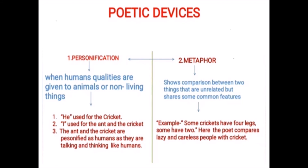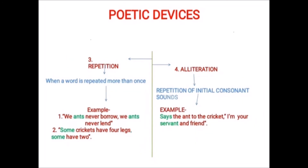The third poetic device is repetition. When a word is repeated more than once, it's called repetition. Look at the example sentences: 'We ants never borrow, we ants never lend' and 'Some crickets have four legs, some have two.' In the first line, 'ants' is repeated; in the second line, 'some' is repeated. That's why repetition is present here.